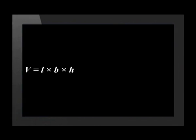This lets us make a formula for the volume of any box-shaped object. The formula uses the length, breadth and height of the object. The volume of the object is length times breadth times height.